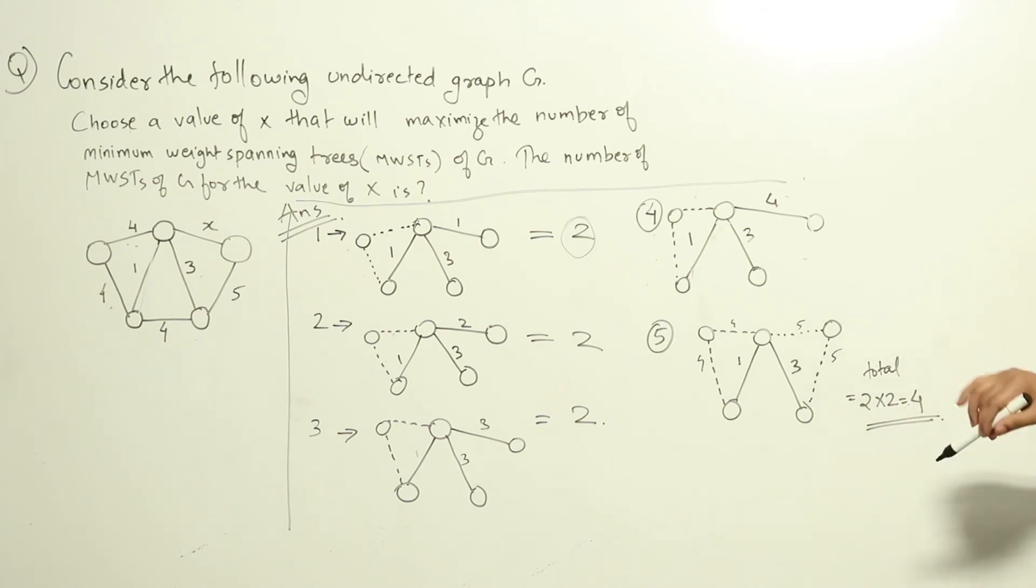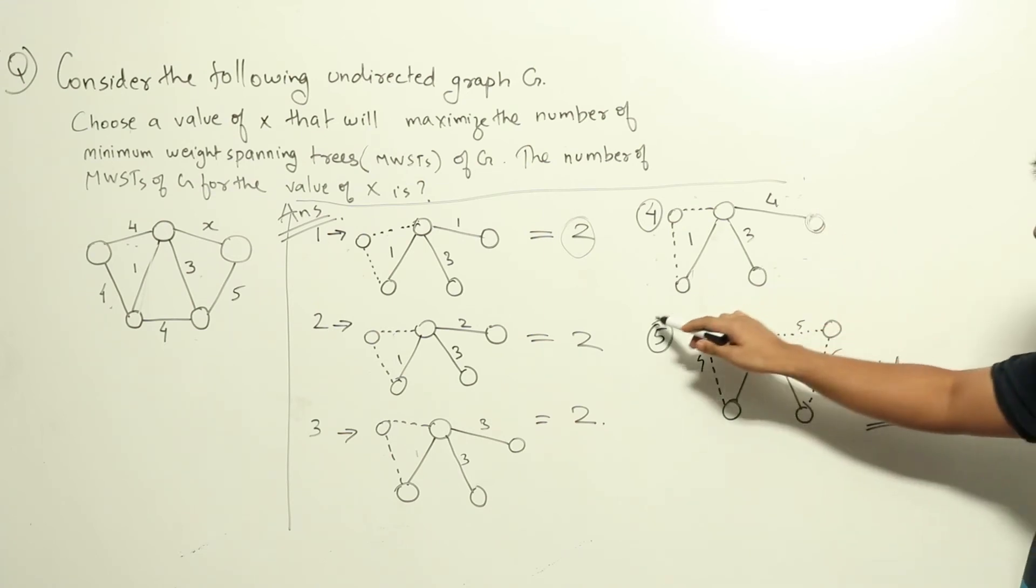Now we are getting some idea here. Only for this node if we can introduce some non-determinism between this and this, if we are giving an option here maybe we will get more graphs. We will try with 5 here.